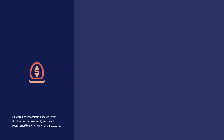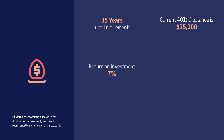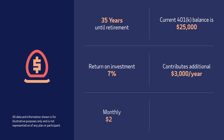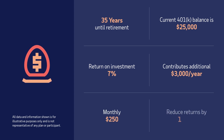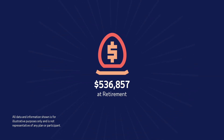Let's assume that a participant has 35 years until retirement with a current 401(k) balance of $25,000. If the return on investments in the account averages 7% over the next 35 years, and the participant contributes an additional $3,000 a year — which equates to a monthly contribution of $250 — and the expenses and fees reduce the average returns by 1.15%, the account balance may grow to $536,857 at retirement.